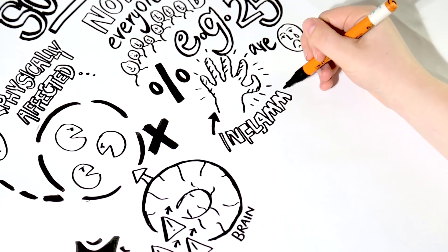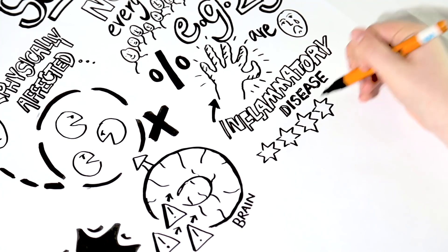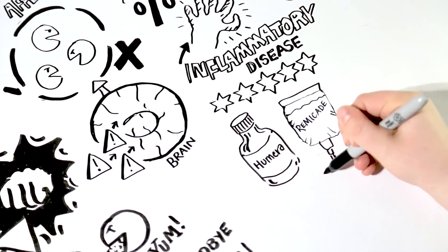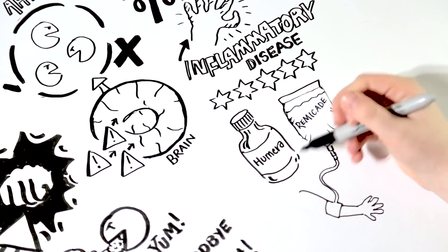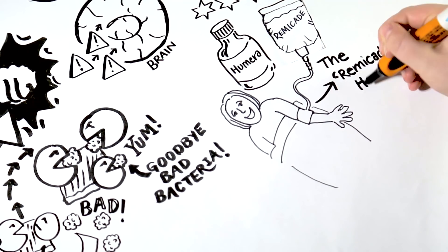Maybe we could treat depressive symptoms in these people using anti-inflammatory drugs. There is already some anecdotal evidence that some of the new anti-inflammatory drugs, like Remicade, can make arthritis patients feel better. They call it the Remicade High.